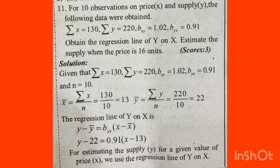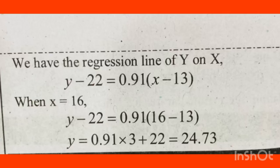x̄ equals Sigma x divided by n, which is 130 divided by 10, giving 13. ȳ equals Sigma y divided by n, which is 220 divided by 10, giving 22. The regression line of y on x is: y minus ȳ is equal to byx into x minus x̄. So y minus 22 equals byx into x minus 13.